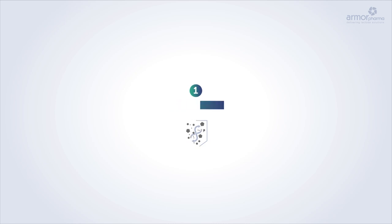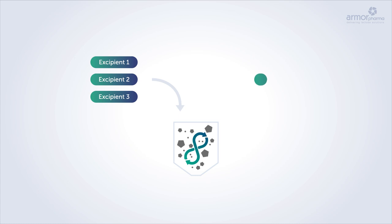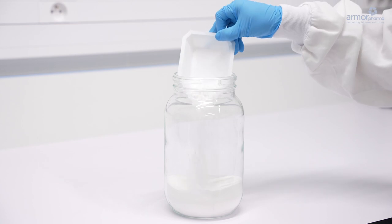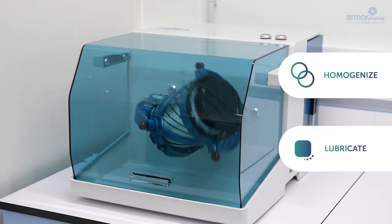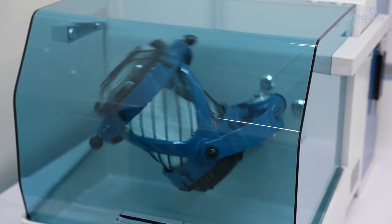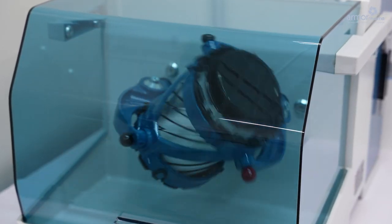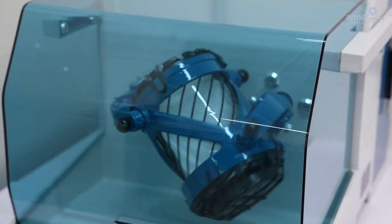Blending: Powder blending is an important step in formulation development as it ensures homogeneity and accurate dosing. Lactose and other excipients are mixed in a Turbula blender to homogenize and lubricate the formulation. The Turbula is a low shear blender with a 3D movement. The mixing process is gentle.